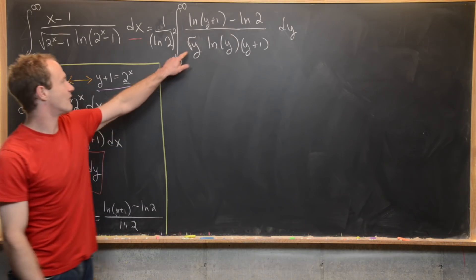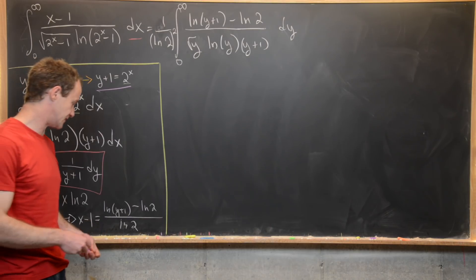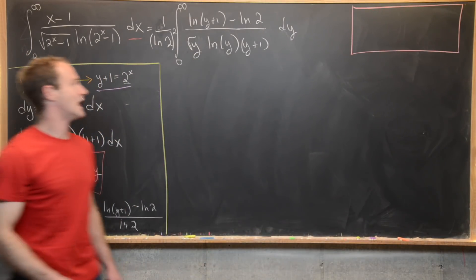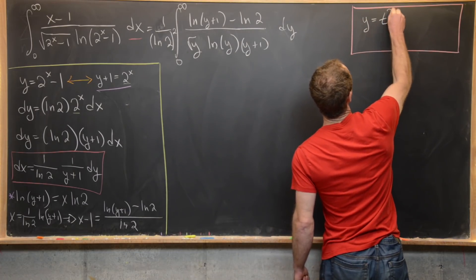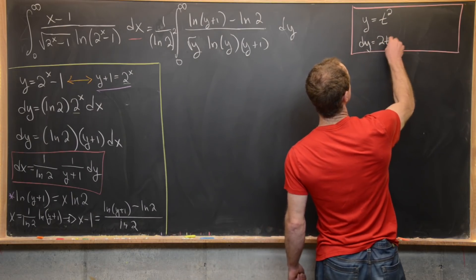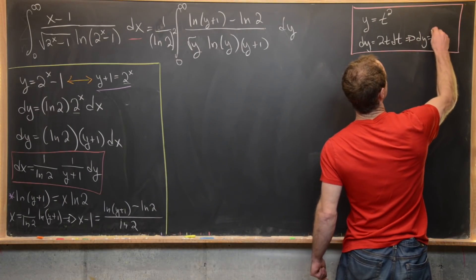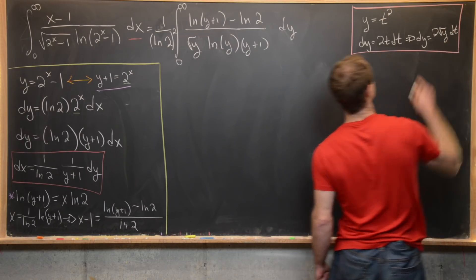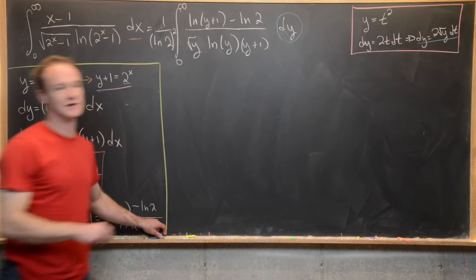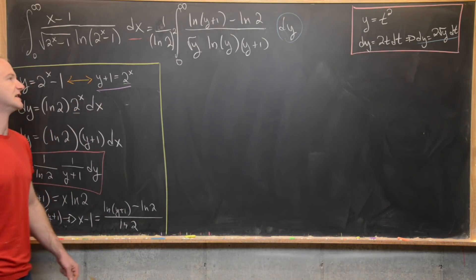Since y appears inside a square root, we make a second substitution: y equals t squared. Then dy equals 2t dt, which means dy equals 2 times the square root of y dt. The bounds of integration stay the same because zero squared is zero, and t squared approaches infinity as y approaches infinity.